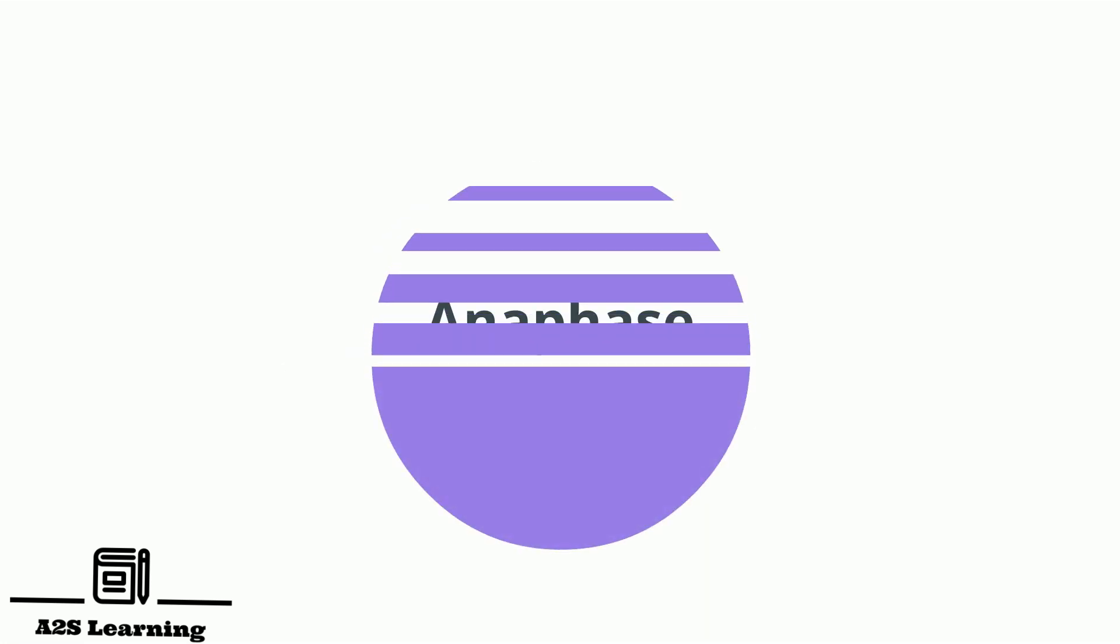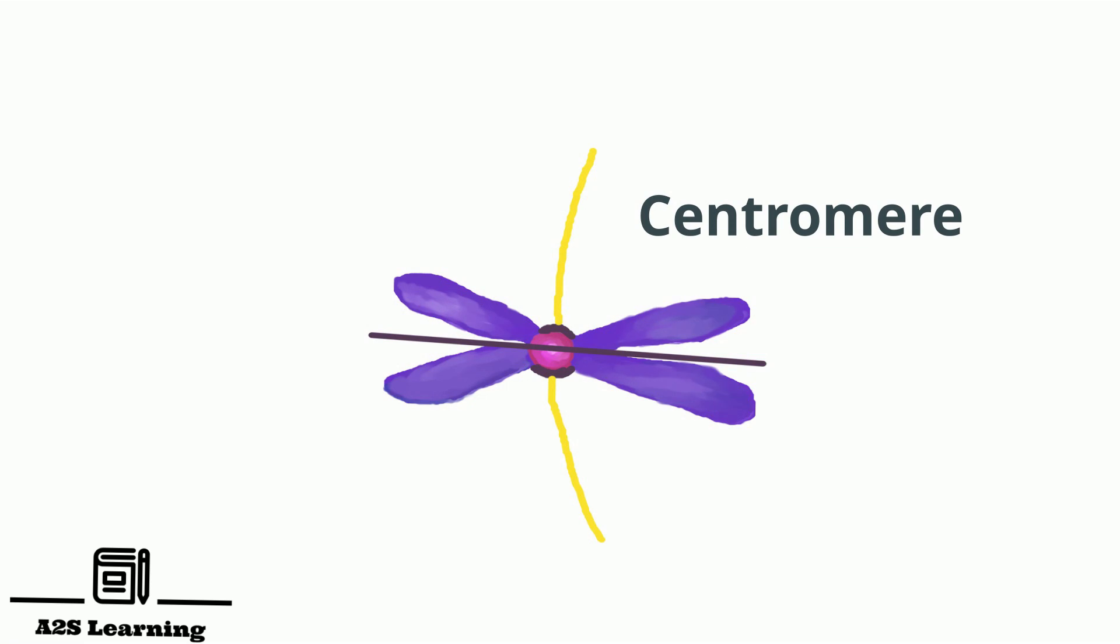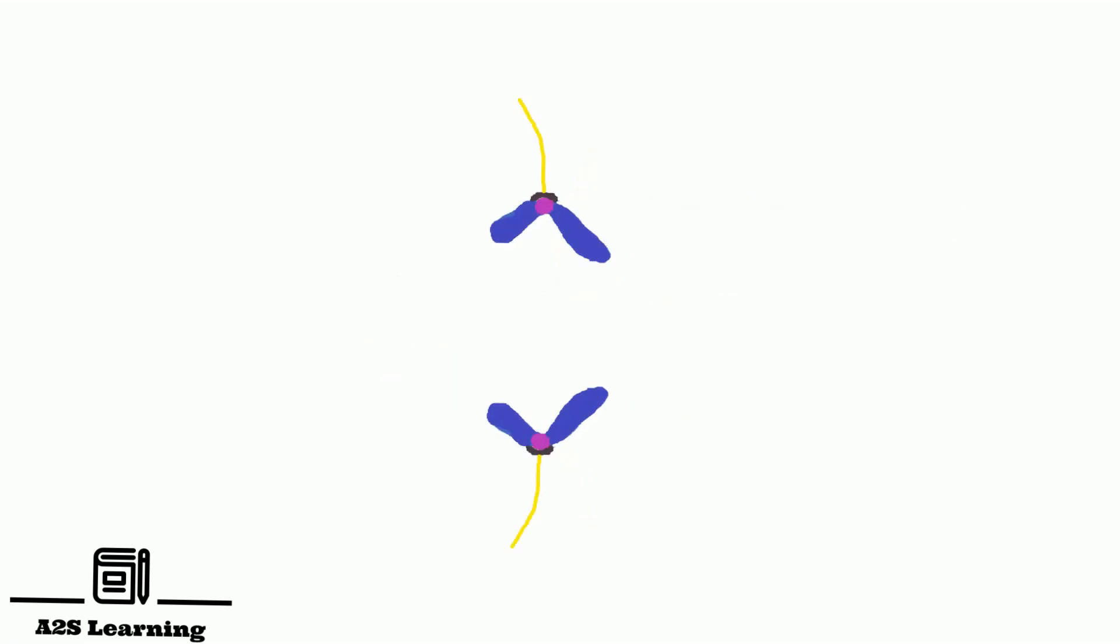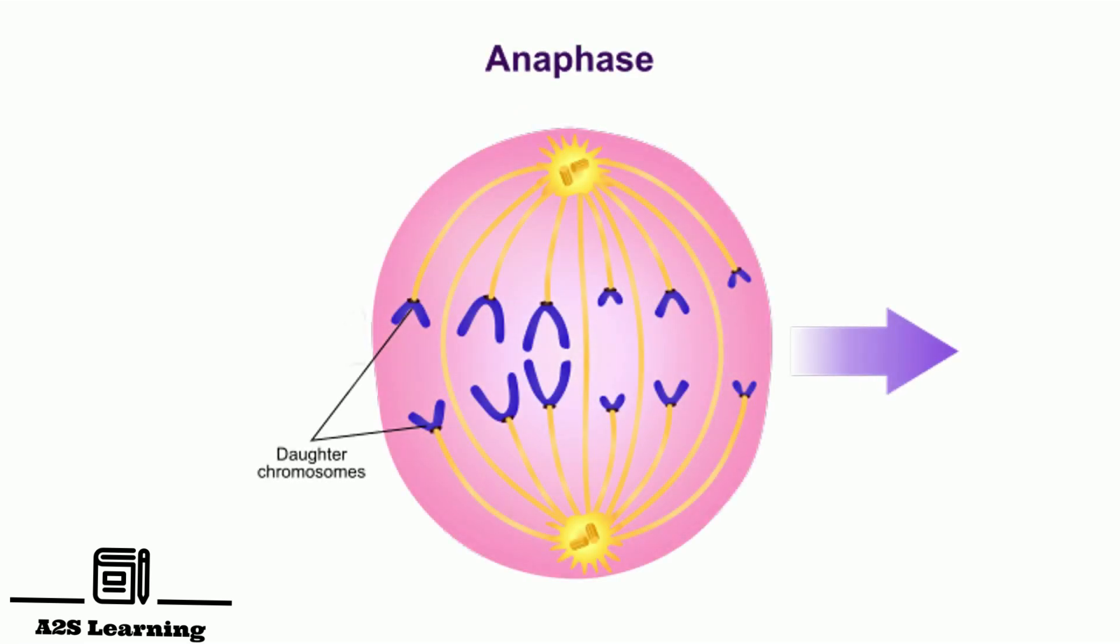Anaphase is the shortest phase of mitosis. During anaphase, the centromere splits separating the two members of each chromatid pair which move towards the opposite poles of the cell. Once separated, the chromatids are termed as chromosomes.